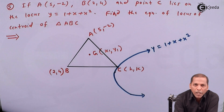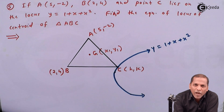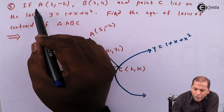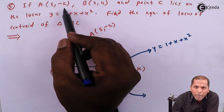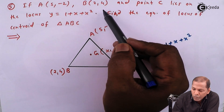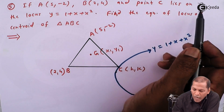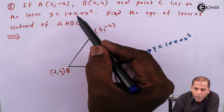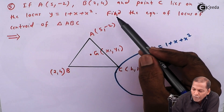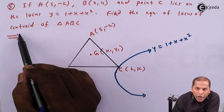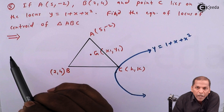Hello friends. Now we see problem number 5, which is based on the topic of locus. The problem states: if A is at (5, -2), B is at (2, 4), and point C lies on the locus y = 1 + x + x², then find the equation of locus of the centroid of triangle ABC.